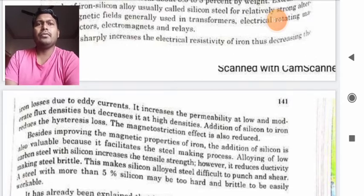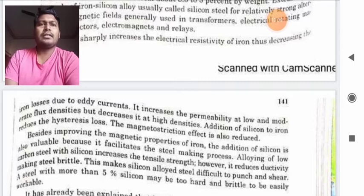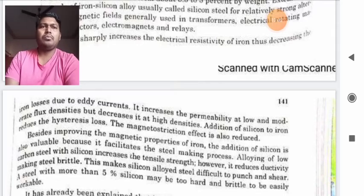Besides improving the magnetic properties of iron, the addition of silicon is also valuable because it facilitates the steel making process. Alloying of low carbon steel with silicon increases the tensile strength. However, it reduces ductivity making steel brittle.